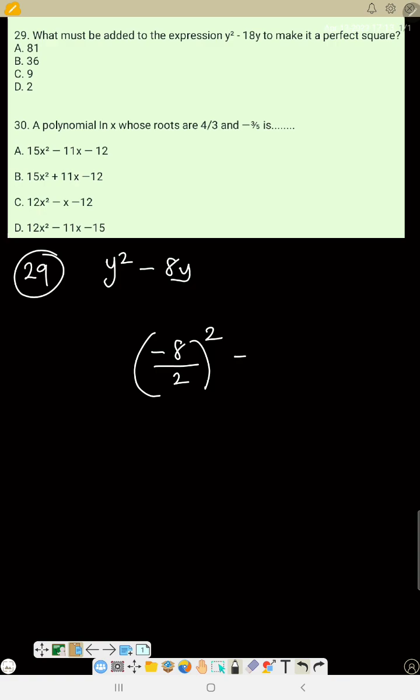Pick the middle number, divide by 2, and square the result. That is minus 4 squared. So what is minus 4 squared? 16. So the answer is 16.